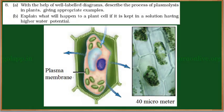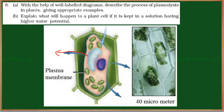When a plant cell is placed in a hypertonic condition — hypertonic means the concentration of solute is more and the concentration of water is less — such a solution is called hypertonic. When a plant cell is placed in a hypertonic solution, the water from the plant cell moves into the solution.